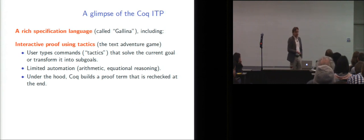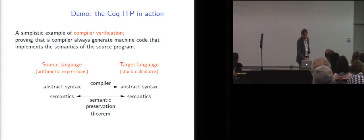And then comes the proof part. So as I said, it's interactive. It's based on tactics. And that's what I like to call the text adventure game, because there's a lot of typing and a lot of backtracking going on. So at any time, the system displays the current goals that remain to be proved. And then the user types commands, tactics, that will either solve the current goal entirely or transform it into simpler subgoals. So there's limited automation. Some types of goals, like involving only arithmetic or equational reasoning, can be solved automatically. And under the hood, as the proof gets developed, Coq records it as a so-called proof term that is re-checked at the end for correctness and exhaustiveness. So you get some very high confidence that if the proof is accepted, it is correct.